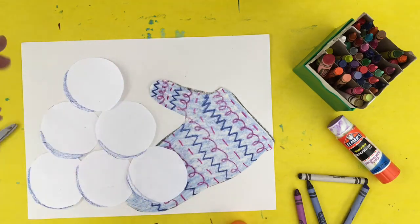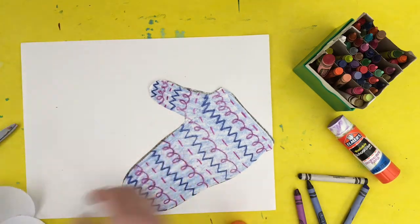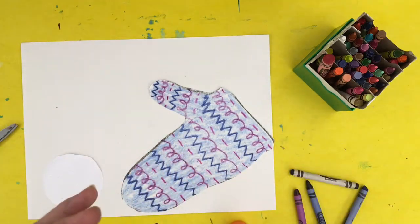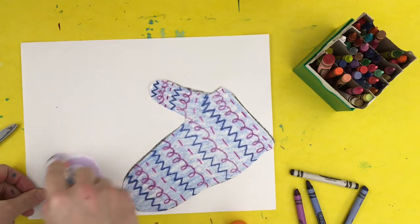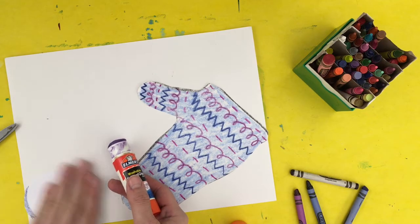Three on the bottom, two in the middle, and one on the top. And I'm going to glue it. Again, go around the outside. Shadows on the bottom. Rub a dub dub.